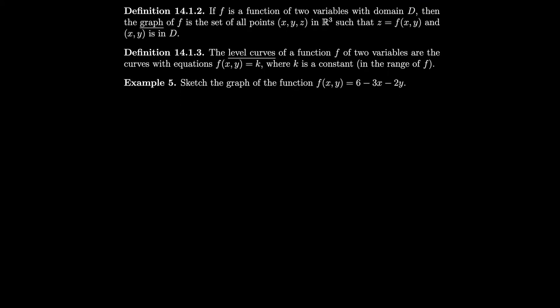If f is a function of two variables with domain D, the graph of f is the set of all points (x, y, z) in ℝ³ such that z = f(x, y) and (x, y) is in D. So the graph is a three-dimensional object. The level curves of a function f of two variables are the curves with equations f(x, y) = k, where k is in the range of f.